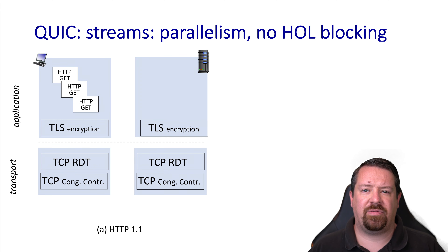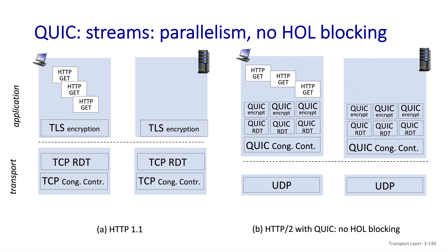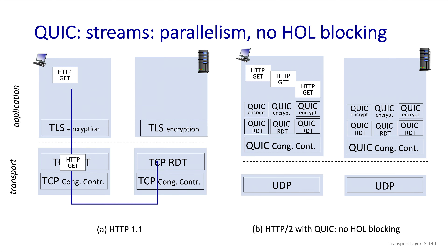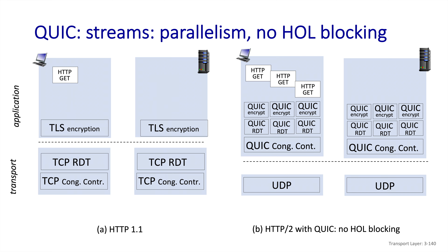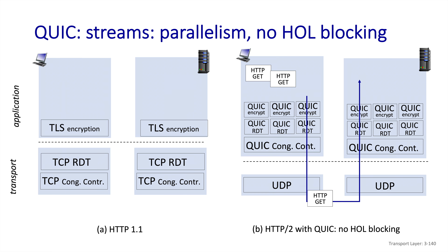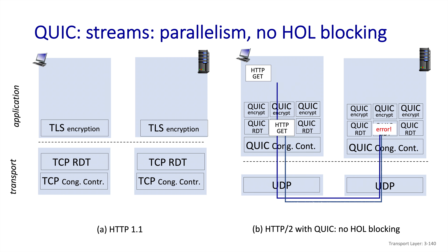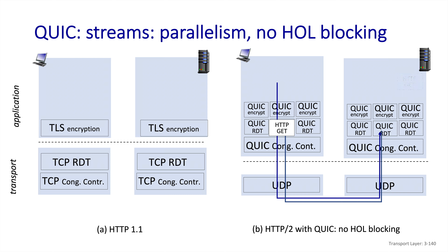With TCP, there can be a head-of-line blocking problem when multiple GET requests are pipelined behind one another. With QUIC, this process is parallelized, meaning that an error in the reliable data transfer doesn't have to hold up other requests from being delivered.